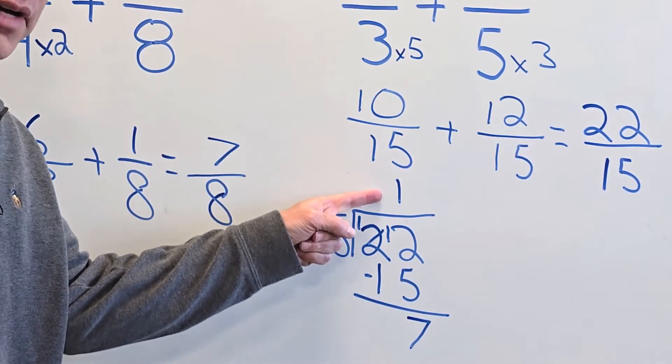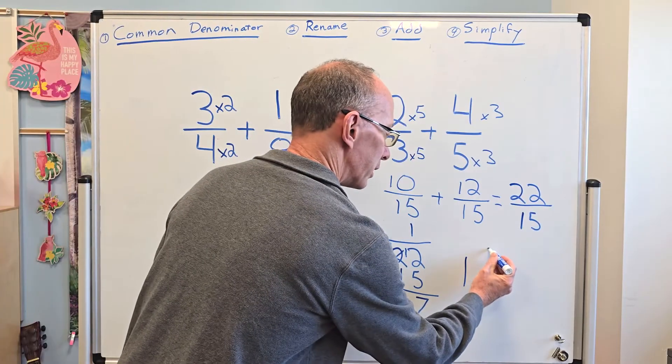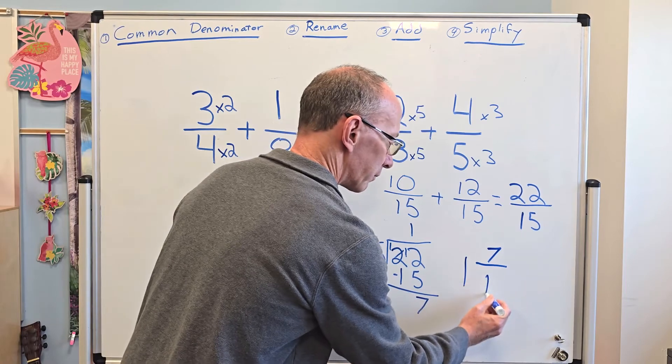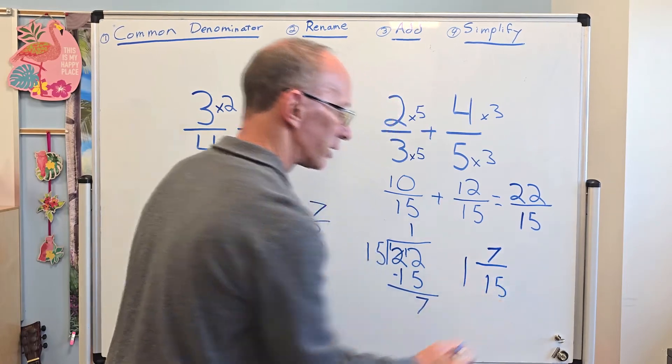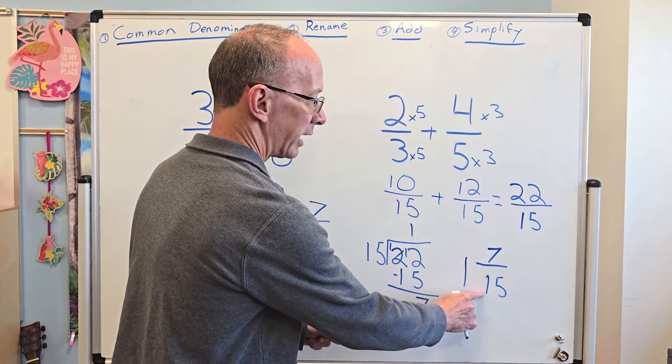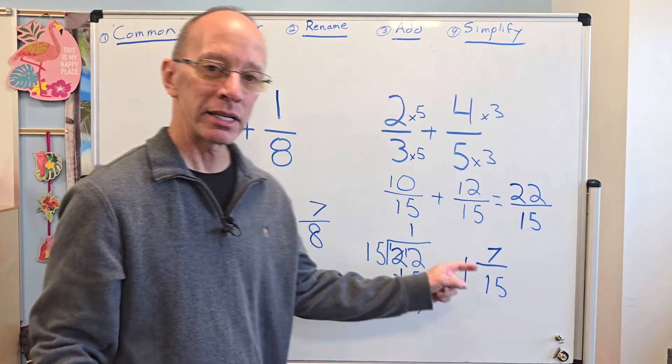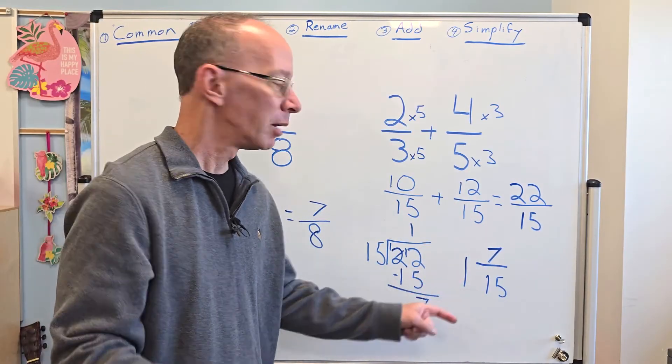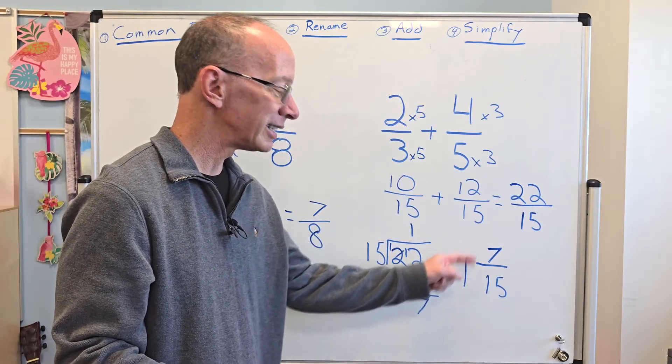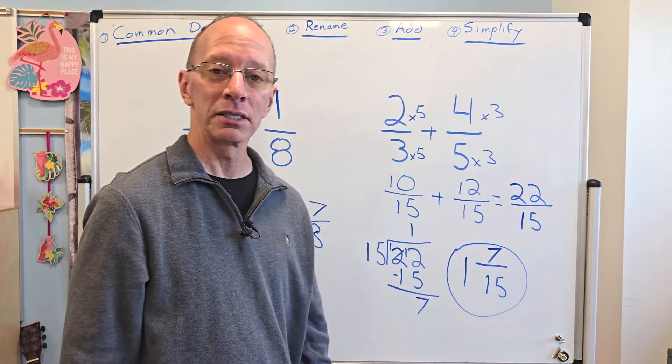Now to write this as a proper fraction. Remember, this is a whole number right here. So I put one right here. Then I take my remainder and I put it up on the top right here. And then I put 15 down here. This is one seven fifteenths. We're keeping it the same denominator, but we're writing it as a whole number and a fraction. So we have one and seven fifteenths. This is our answer. Oh my goodness. That was a doozy.